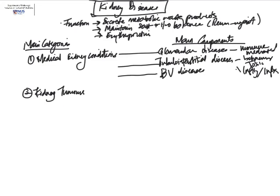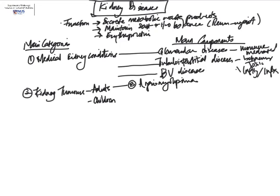Kidney tumors are generally considered surgical conditions. One way to divide them is to look at tumors in adults versus children — this is a broad overview, not comprehensive. Among adults, I want to talk about one benign tumor: the angiomyolipoma. As the name suggests, it is composed of three components. This tumor has a classical appearance on imaging. The three components include fat, spindle myoid-type cells, and blood vessels — that's how we recognize them on histology.